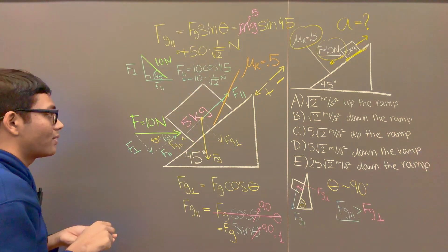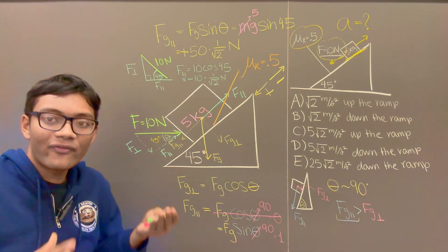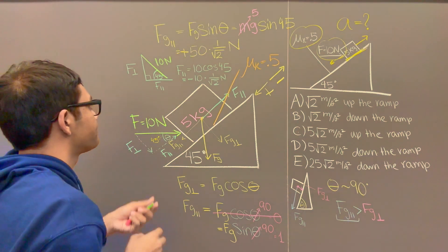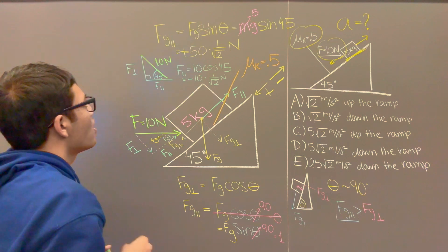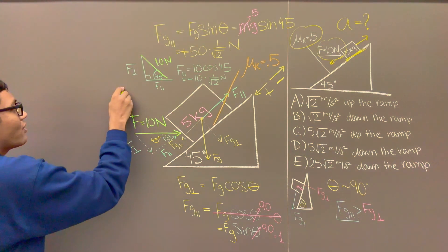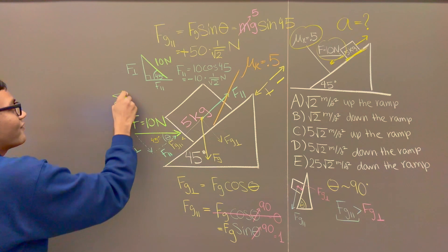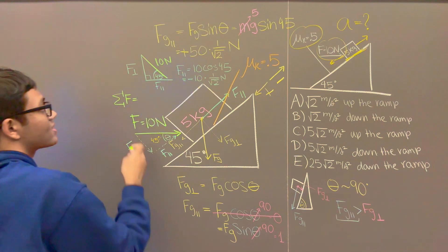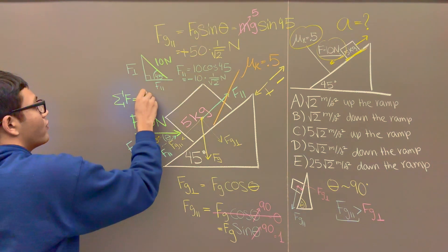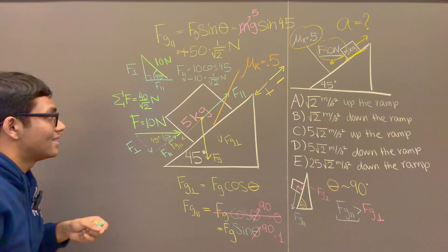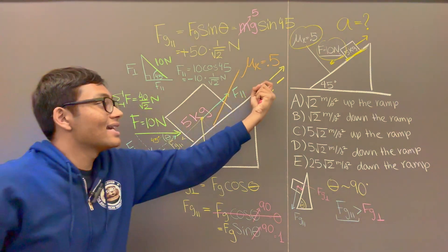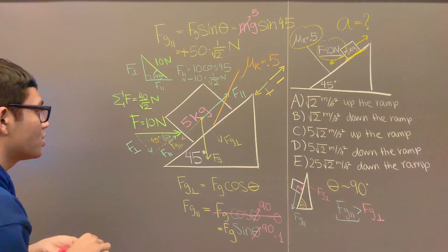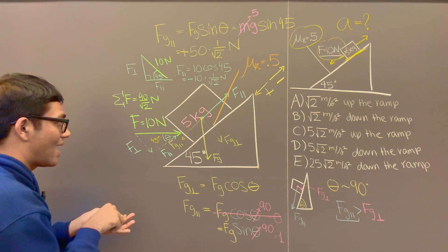Now I've got all my forces except friction — we'll come to that shortly. First, notice what is the direction of the net force so far without accounting for friction. The net force is Fg parallel plus F parallel, which gives us 50/√2 minus 10/√2 = 40/√2 newtons, acting down the plane. So the force of friction will be acting up the plane.